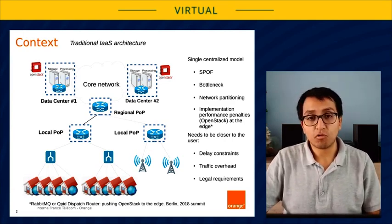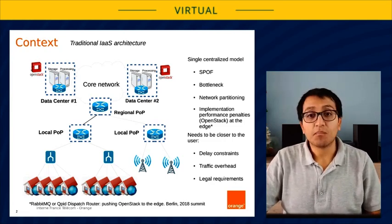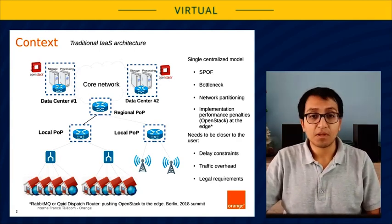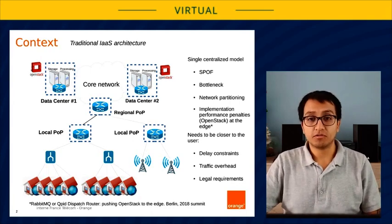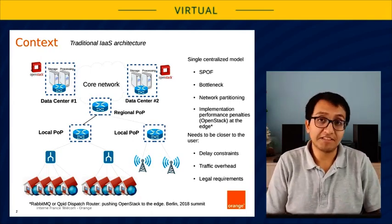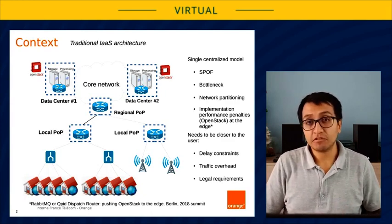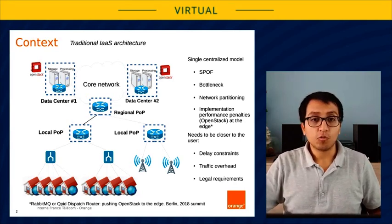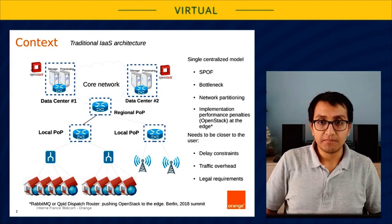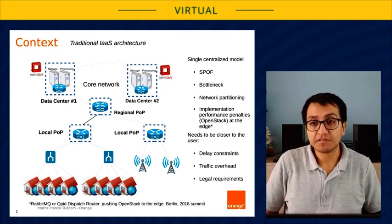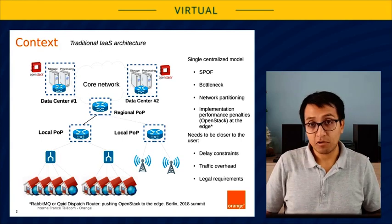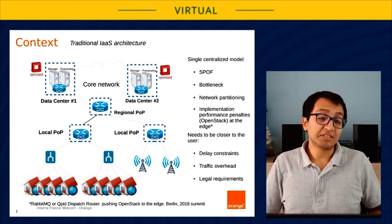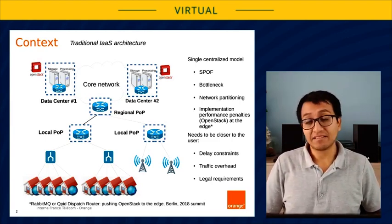In a traditional deployment as the one of the example, there are several problems related to the centralized management. The OpenStack instance by itself will be a single point of failure and a bottleneck. We need the VIM to be closer to the user, in some cases to respect delay constraints, to avoid traffic overhead at the backbone also. And in other cases to respect legal requirements, where data needs to be stored at a precise site and not at a data center location.